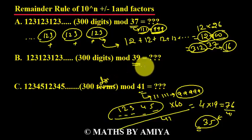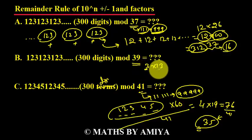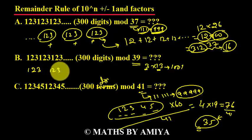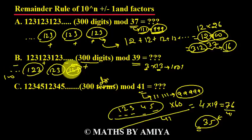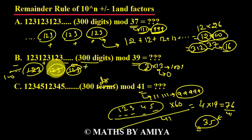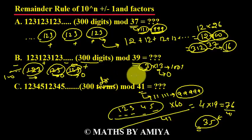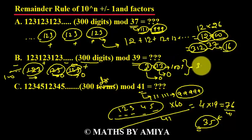Now solve Question 2: the divisor is 39, which is 3 times 13. We break it into prime factors. 13 is a factor of 1001, so we make bundles of 3 digits with alternating plus, minus signs. With 300 digits we have 100 bundles, and since we have an even number of bundles, the plus and minus effects cancel each other out — so the remainder by 13 is 0. The rule for 3 is the sum of digits. The sum of one bundle (1+2+3) equals 6, which is divisible by 3, so all bundles are divisible by 3 and the remainder by 3 is 0. Since remainder by 13 is 0 and remainder by 3 is 0, the remainder by 39 is also 0.